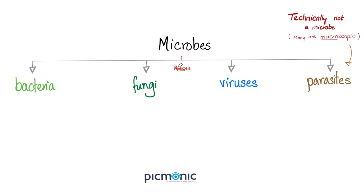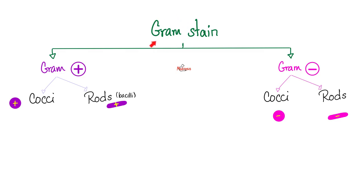Microbes are: bacteria, fungi, viruses, and parasites. Technically, viruses are particles, not microorganisms, and technically, parasites do not belong with microbes because many of them are macroscopic, not microscopic. Mr. Gram discovered and invented the gram stain, and this is very useful to differentiate between many gram positive bacteria versus gram negative bacteria.